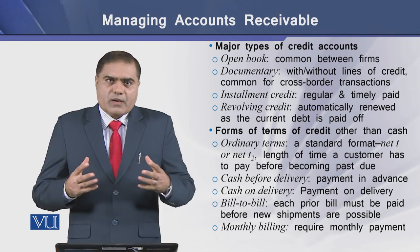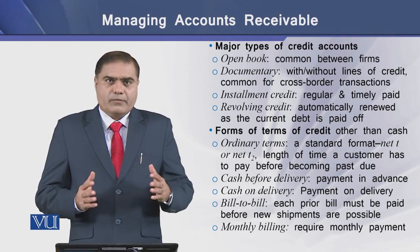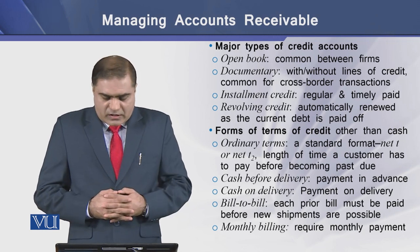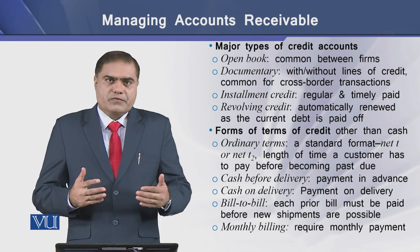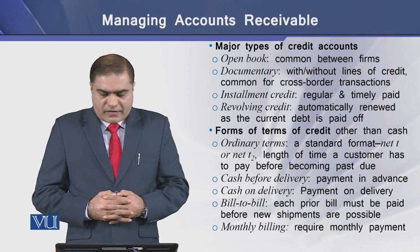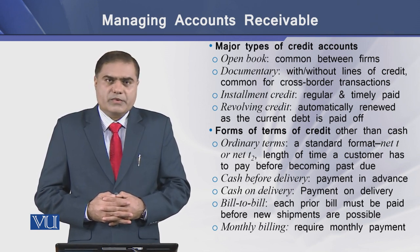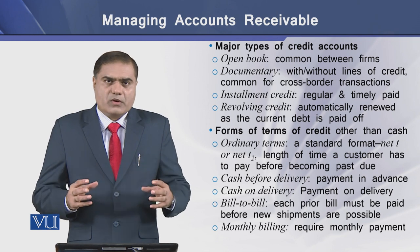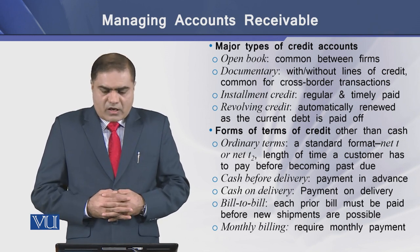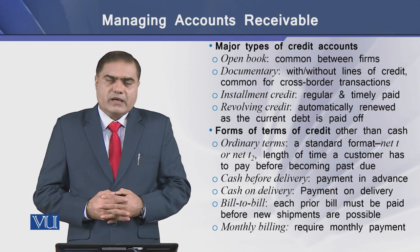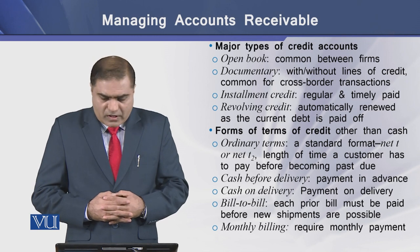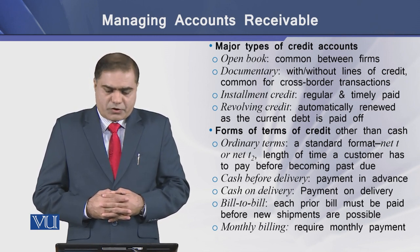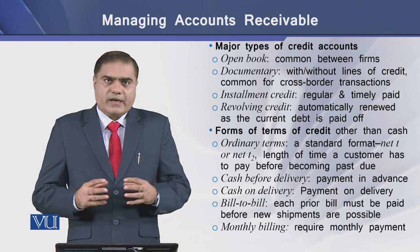There are major types of credit accounts available in the market. The first is open book credit, which is the most common type seen between firms. Documentary trade credit is used with or without a line of credit, most commonly seen in cross-border or international transactions. Installment credit covers lease transactions with regular and timely payments. Revolving credit is automatically renewed as the current debt is paid off.